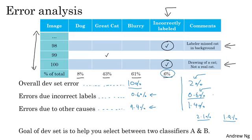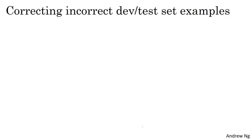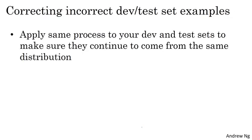Because in this example on the right, it's just having a very large impact on the overall assessments of the errors of the algorithm. Whereas in the example on the left, the percentage impact it's having on your algorithm is still smaller. Now, if you decide to go into your dev set and manually re-examine the labels and try to fix up some of the labels, here are a few additional guidelines or principles to consider. First, I would encourage you to apply whatever process you apply to both your dev and test sets at the same time. We've talked previously about why you want your dev and test sets to come from the same distribution.